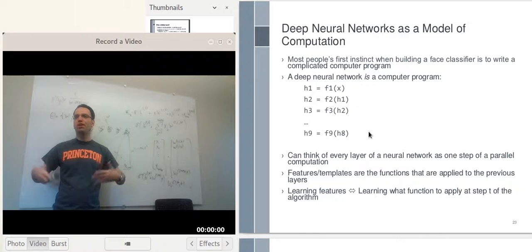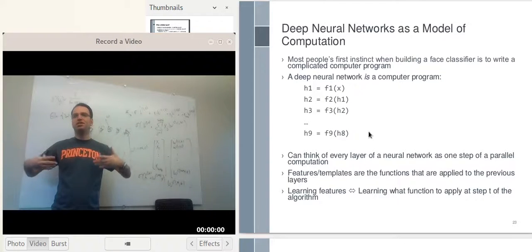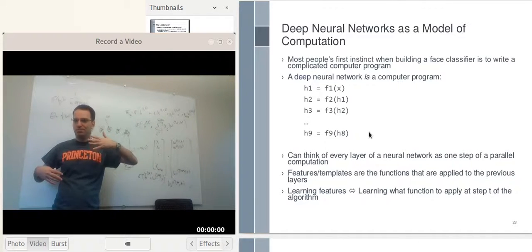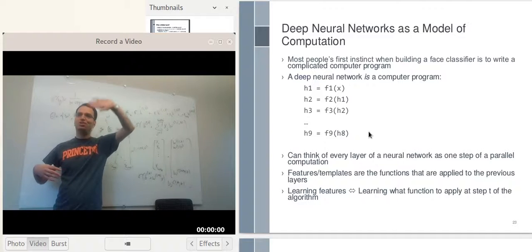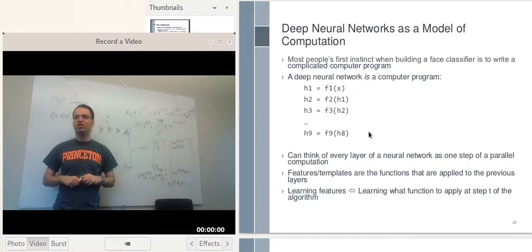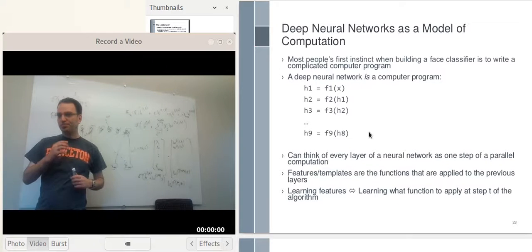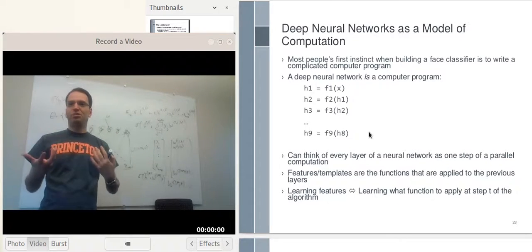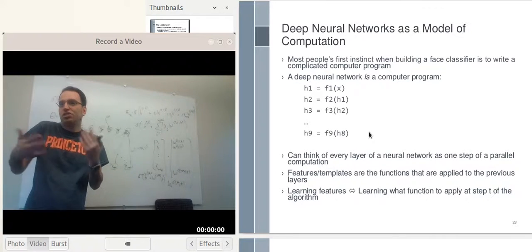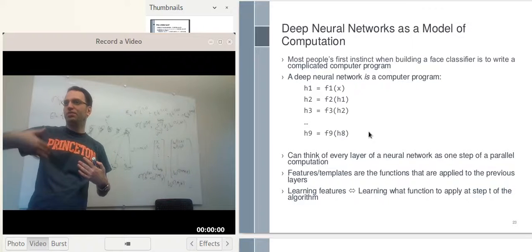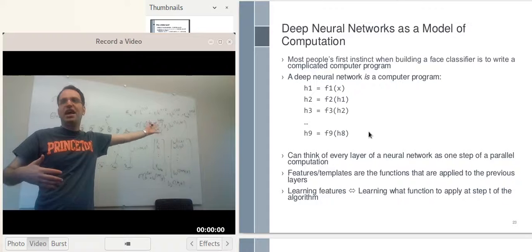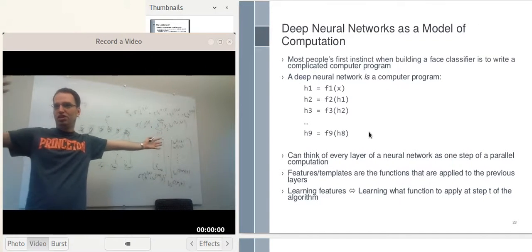You can think of every layer in your network as one step in this parallel computation. We also know the same thing happens in our brain — certainly in the visual cortex — where information comes into your retina, propagates to the visual cortex, and neurons there communicate further to other neurons in the visual cortex, which activate depending on which neurons activated before them. The templates — sometimes called features — are the functions applied to previous layers, and learning features means figuring out which functions to apply at each layer.